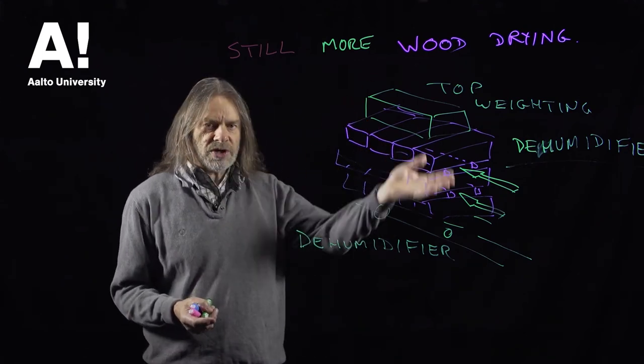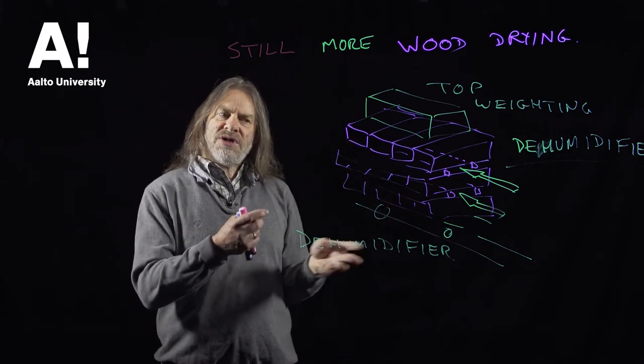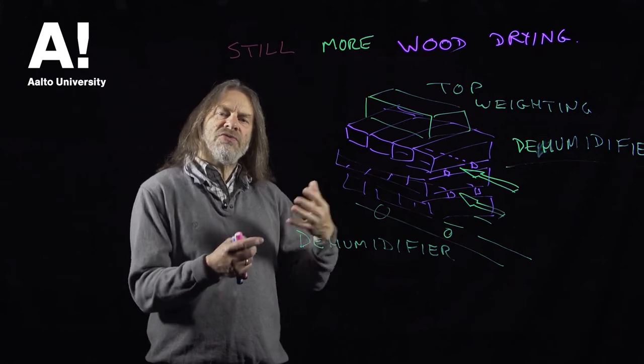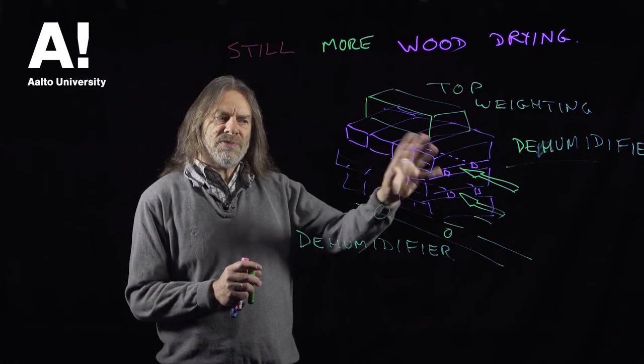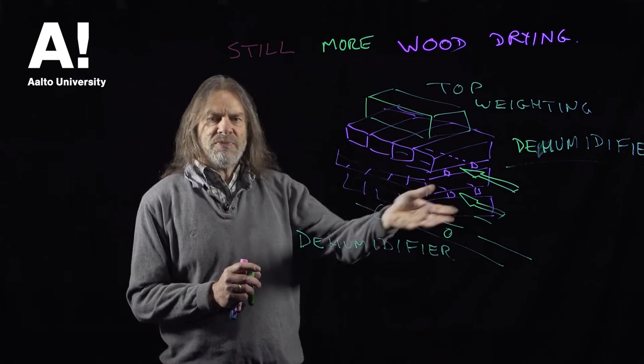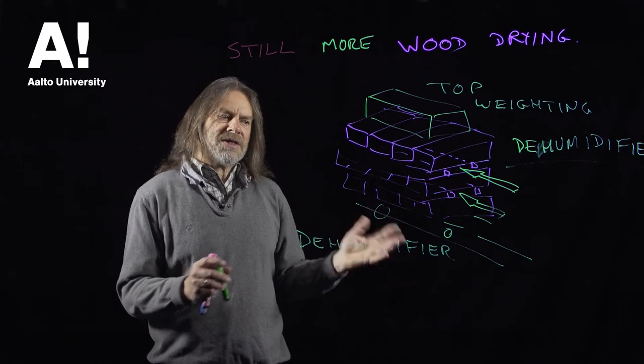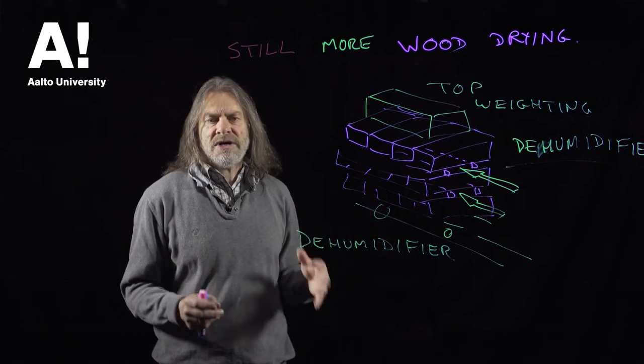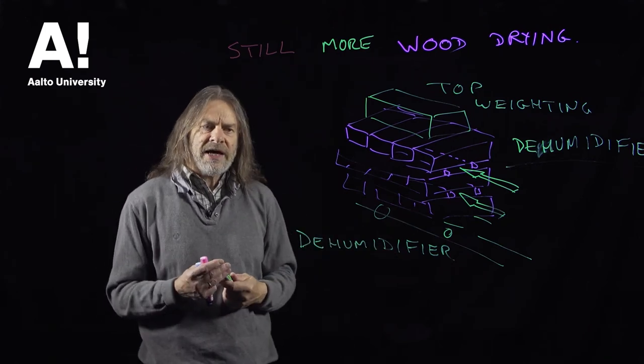You're not using heat and the timber tends to dry at more of its own rate in that case, so you don't have the same problems you might get with a temperature kiln, but it's going to be a lot slower. For large mills that have high throughput and high volumes, they're not going to rely on this type of kiln.